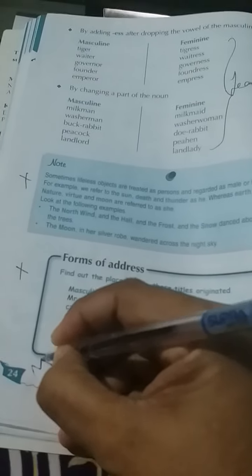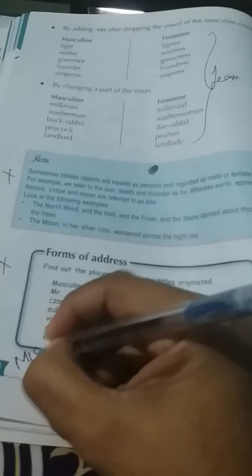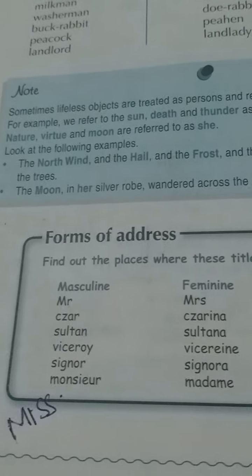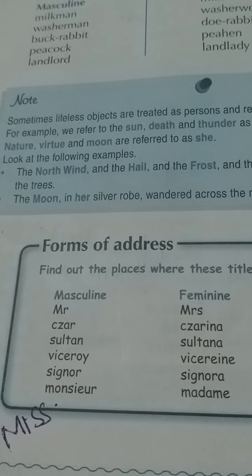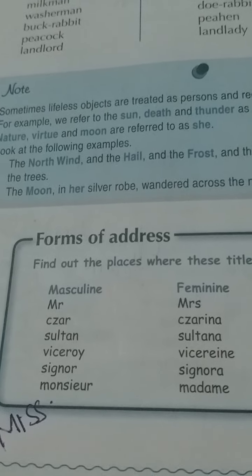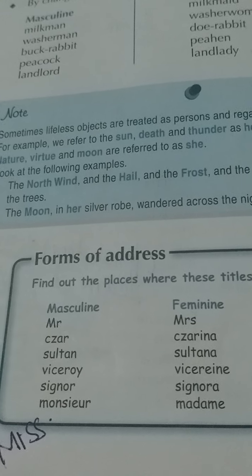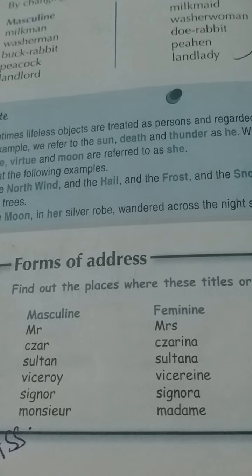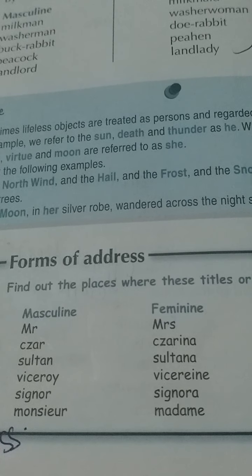If you have a sister who is unmarried, before her name we put Miss — spelled M-I-S-S. For unmarried boys of your age, we use Master — like Master Prateek, Master Ashok, Master Ram. So Master is masculine and Miss is feminine. This is clear.